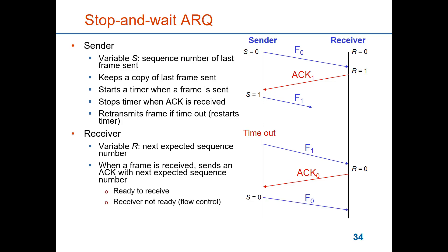You now need acknowledgements with a richer semantic than for flow control, because you have two cases to distinguish. One is the regular case where the receiver is ready to receive the next frame, meaning the prior frame has been correctly received. But there is also the case where it acknowledges a frame that arrived but signals it is not ready to receive the next frame — receiver not ready. When it is ready to receive again it simply sends another acknowledgement with the sequence number it is waiting for.